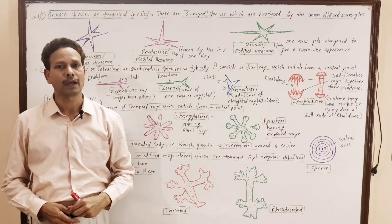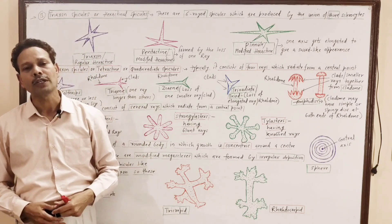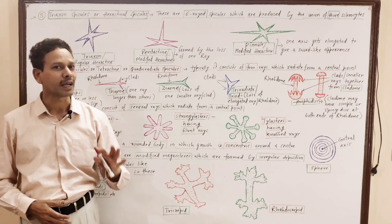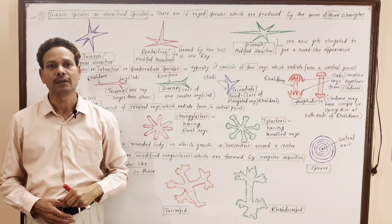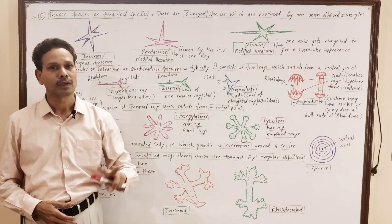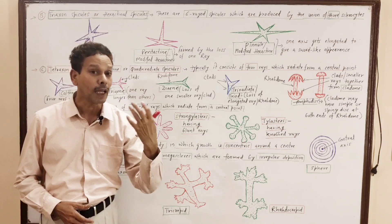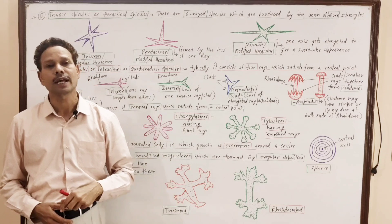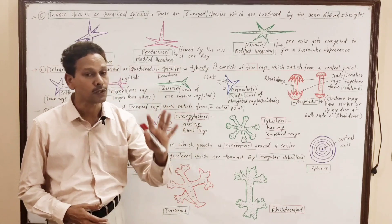Skeleton in the case of phylum Porifera. In phylum Porifera, in sponges, the skeleton mainly consists of fine needle-like crystalline structures. These are named spicules or sclerites. These spicules are classified on the basis of size into two classes: the smaller ones are named microscleres, while the spicules which are larger in size are megascleres. The spicules are also classified on the basis of chemical nature.